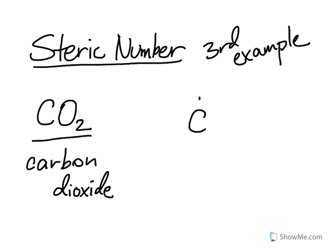Well carbon has four valence electrons, so one, two, three, four. Again we spread out the electrons before we start to pair them up.